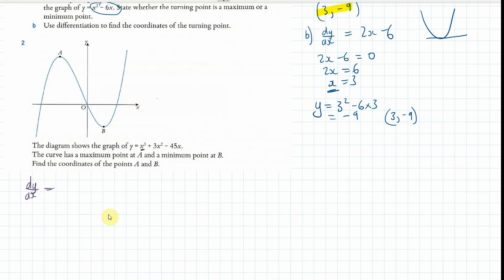We're going to drop the power down, so it's going to become 3x squared, plus, we take this coefficient, multiply it by that power, so it's going to be 6x, and then the last one is going to be minus 45, because the power is 1. 1 times minus 45 is minus 45. Now, we know that these have a gradient of 0, both of them. So, we're going to set this equation equal to 0.